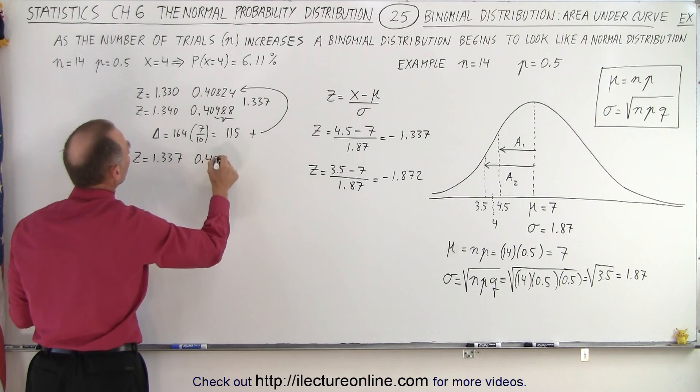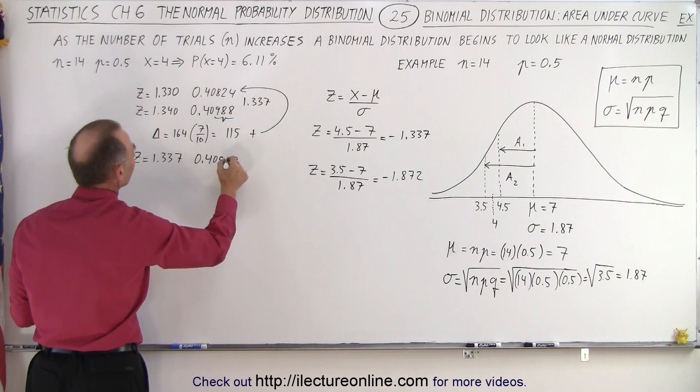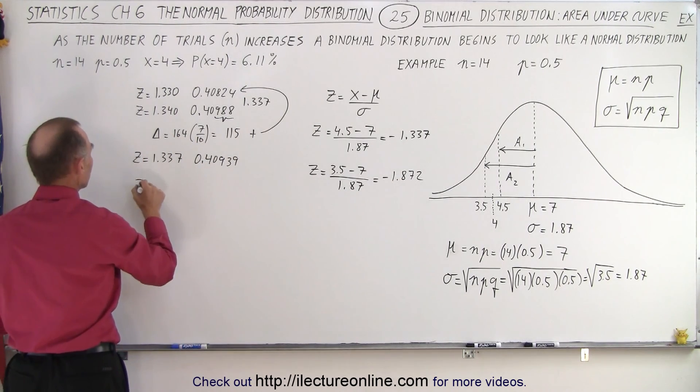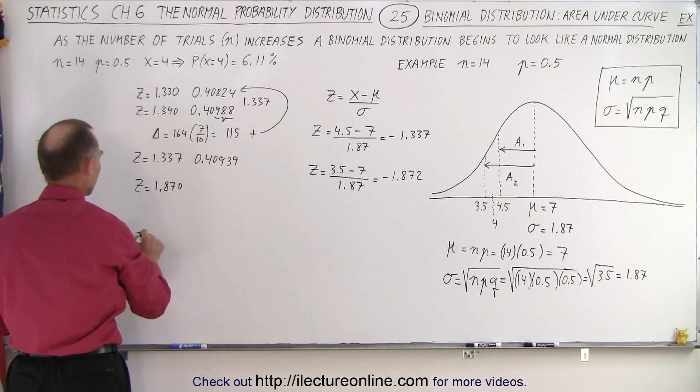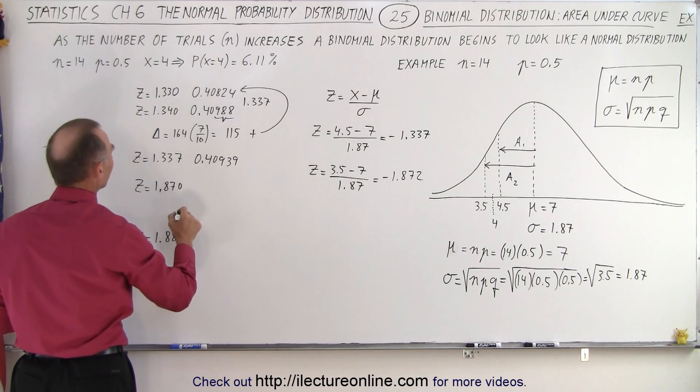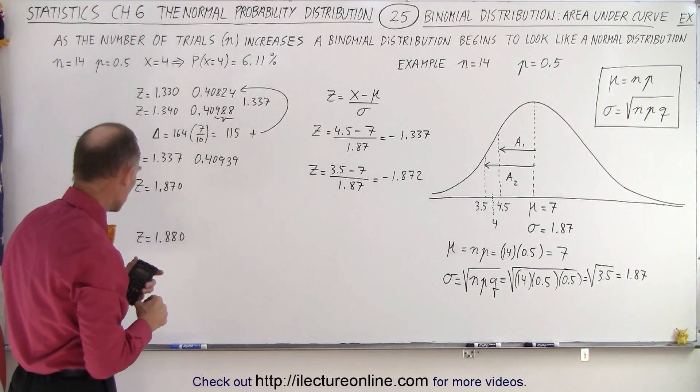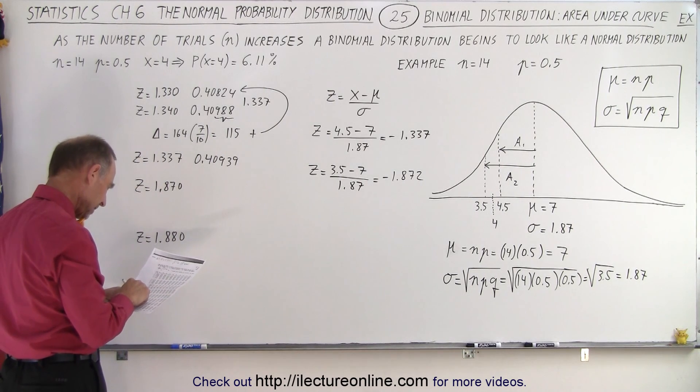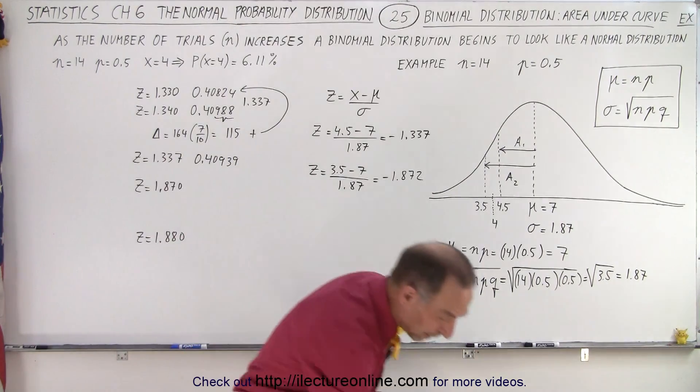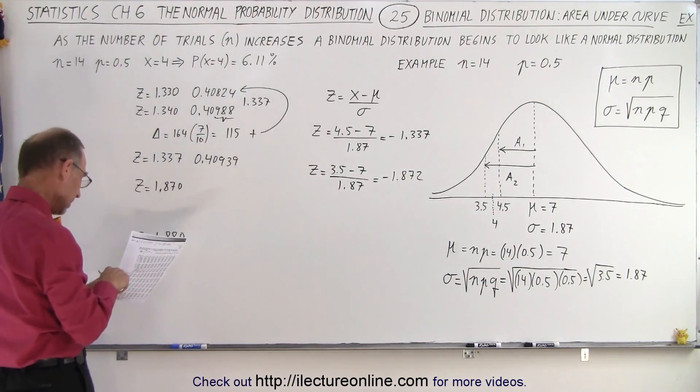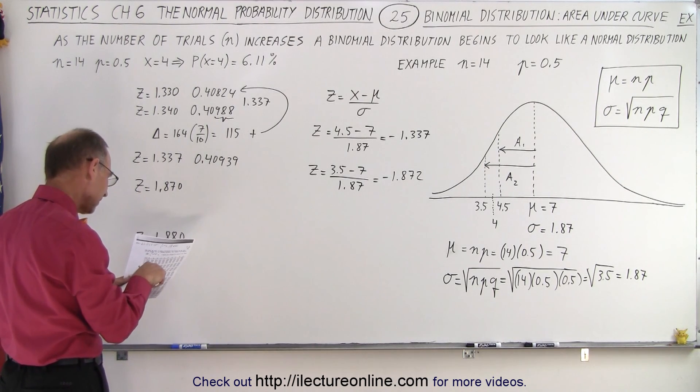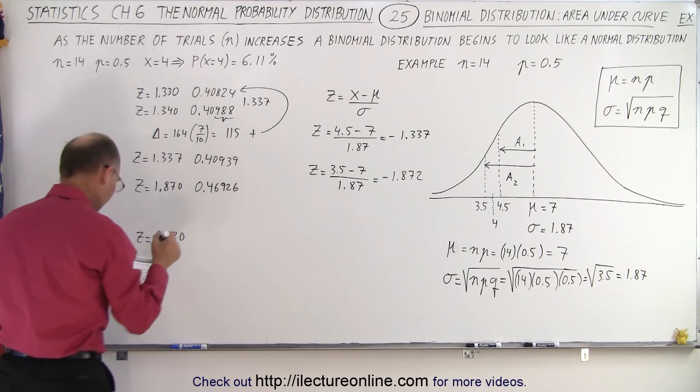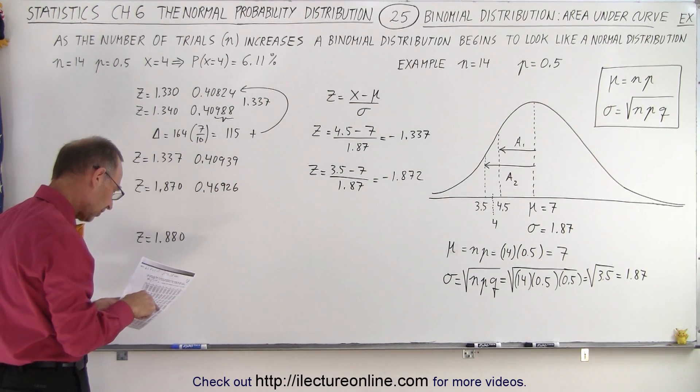I need to do the same thing for my next z value 1.872. So z equals 1.870 and z equals 1.880, and then I need to find it for z equals 1.872, so again I need the table. 1.87 is 0.46926, and for 1.88, 0.46995.